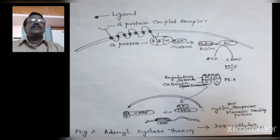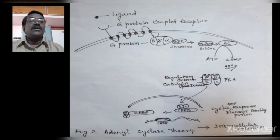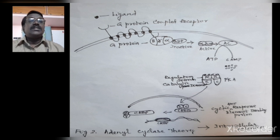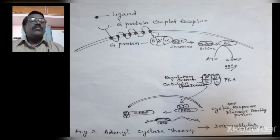Looking at the figure, there is a ligand or hormone molecule ready to bind with the G-protein coupled receptor. The G-protein coupled receptor has seven transmembrane domains and is associated with the G-protein, which is formed of three subunits. The alpha subunit is always associated with GDP, and when associated with GDP it is in an inactive stage. When it triggers adenyl cyclase, the adenyl cyclase enzyme combines with GTP and becomes active.